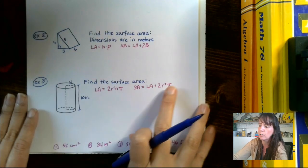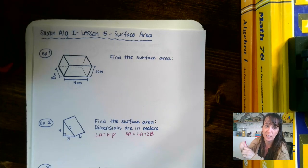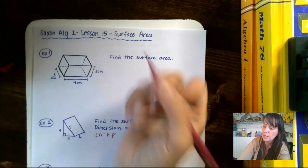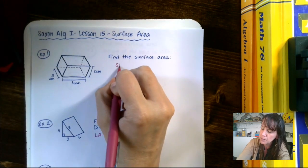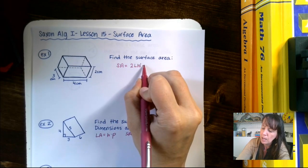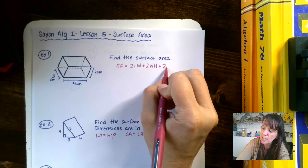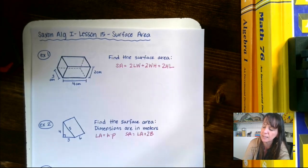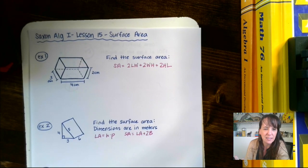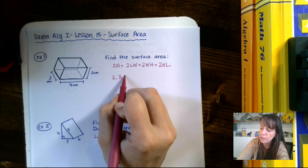So this is Lesson 15. We are going to be talking about finding the surface area of these shapes. The first one is my favorite because it's super easy. You'll notice we have that technically this is what the formula looks like. Surface area equals 2 times the length times the width, plus 2 times the width times the height, plus 2 times the height times the length. We've got three numbers here: 2, 3, and 4.